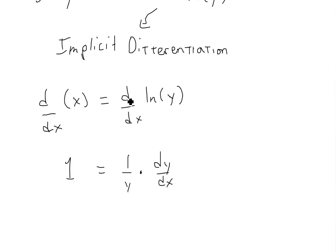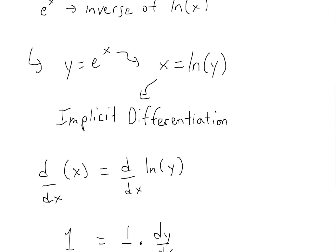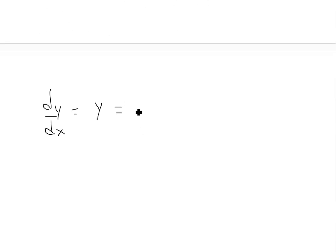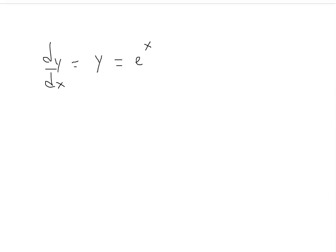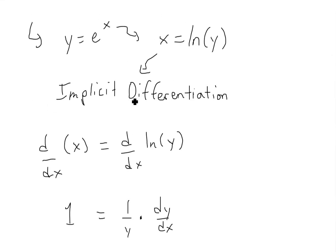And in this case, we know that y equals e to the x. So this equals e to the x. In other words, we just put the y inside, or the e to the x inside. So d over dx of e to the x equals e to the x. So the derivative of e to the x is itself, and it's pretty straightforward, an easy way to prove it.